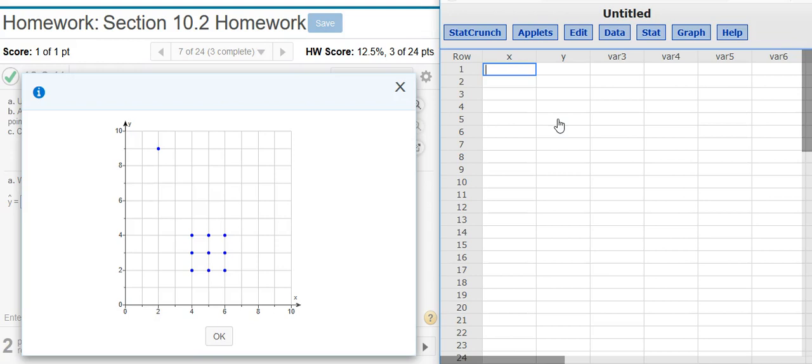And now I'm going to go and get the ordered pairs for each of my data points. Starting here with this point all by itself, the X value for that is 2 and the Y value is 9. So we'll put in 2, 9. And then for the nine points here that are in a square formation, we've got three points that have an X coordinate of 4, three coordinates that have an X coordinate of 5, and three that have an X coordinate of 6. And then we've got three points—these three points have Y values of 2, 3, and 4, as do the next three and the last three. So there's the ordered pairs for all 10 of my data points that are here in the scatterplot.